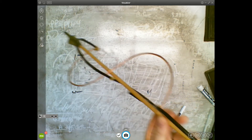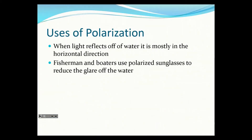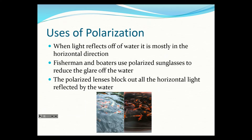Another use of polarization: when light reflects off of water it's mostly in the horizontal direction, so the vertical component gets cut off. Fishermen and boaters use polarized sunglasses to reduce glare off the water. Polarized lenses block all the horizontal light, so you can't see the fish without them, but with polarized glasses all that reflected light is blocked and you can see into the water.